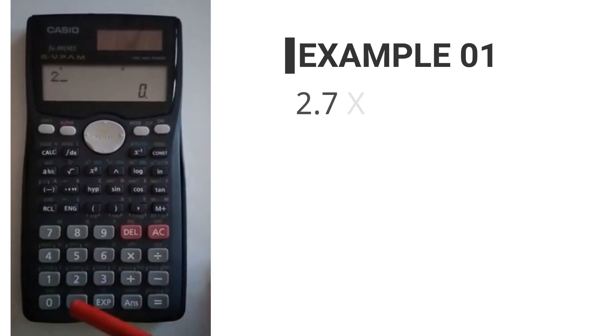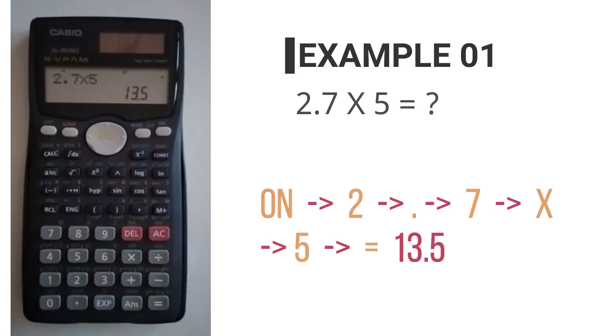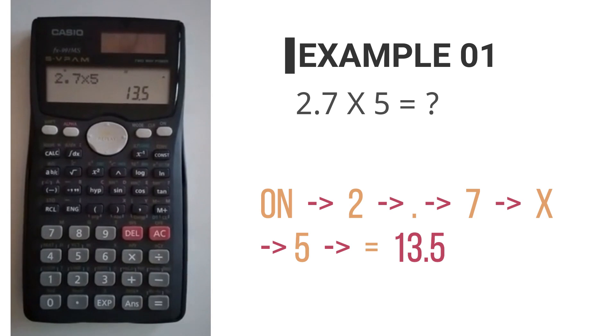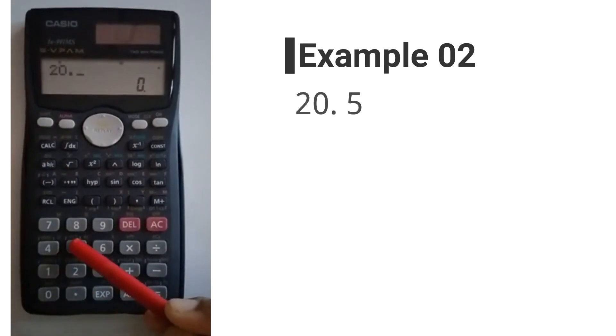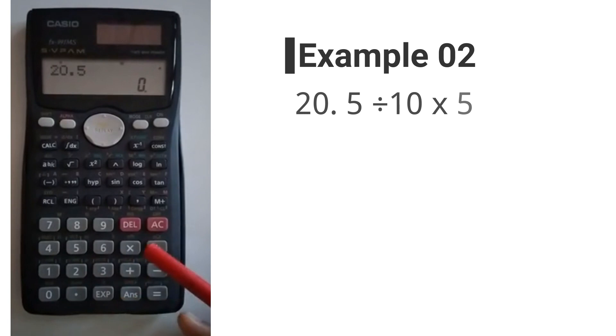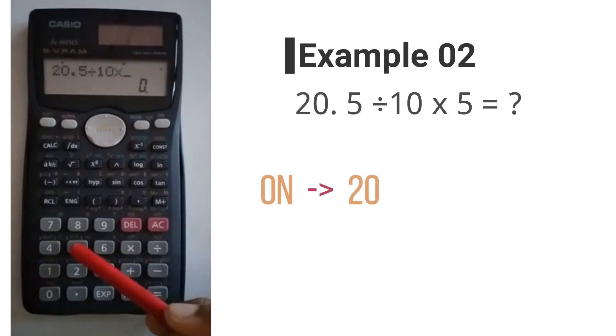Example 1: 2.7 multiplied by 5 equals 13.5. Moving on to the second example: 20.5 divided by 10 and multiplied by 5.